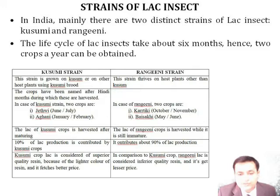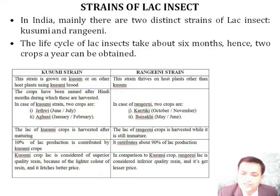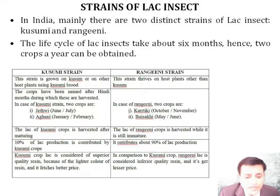There are two strains: Kusumi strain and Rangini strain. Rangini is grown on host plants other than kusum. Their names are given based on the Indian Hindu months calendar. In the case of Kusumi strain, there are two crops: Jyesthwi and Aghani. In the case of Rangini, two crops are Kartiki and Baisakhi. The lac of Kusumi crop is harvested after maturing, but Rangini crop lac is harvested at an immature stage. Ten percent of lac production is contributed by Kusumi crops, and 90 percent by Rangini strain.